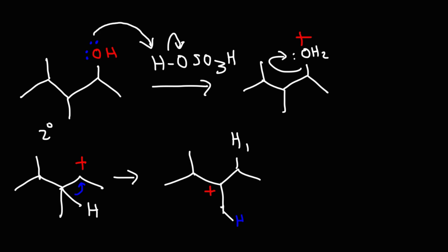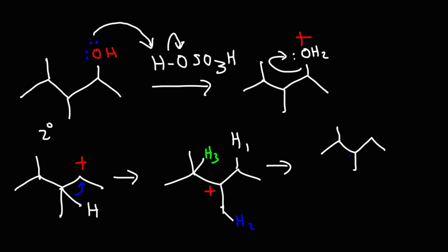So we can remove hydrogen one, a base can remove hydrogen two, or it can abstract hydrogen three. If the base abstracts proton three, the double bond will form in this vicinity giving us that product. If the base abstracts proton two, we get another product. And if the base abstracts proton one, we get a third possible product. So which of these three alkenes is the major product?